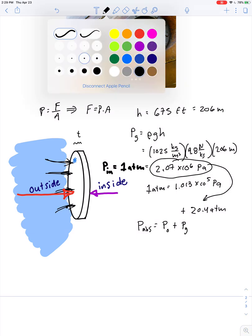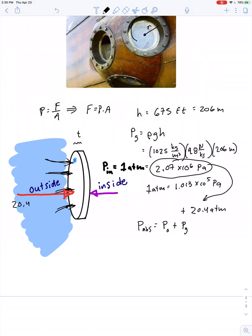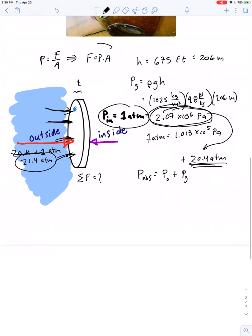So the pressure inside, hopefully, is equal to 1 atmosphere. So from the outside, you have 20.4 plus 1 atmospheres, or 21.4 atmospheres. So what we're really interested in here is what's the net amount of force acting on this window. So we can take the pressure inside, subtract it from the pressure outside. If we do that, then we're just right back to a difference of 20.4 atmospheres, which is 2.07 times 10 to the 6th pascals.